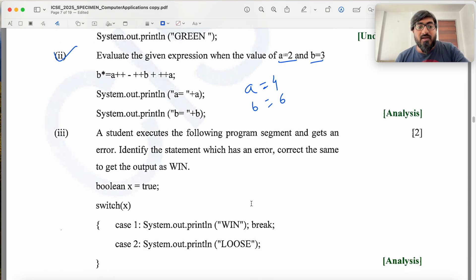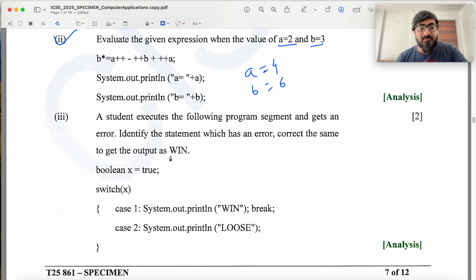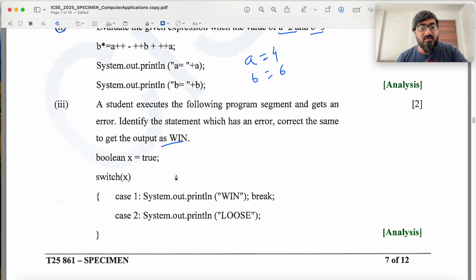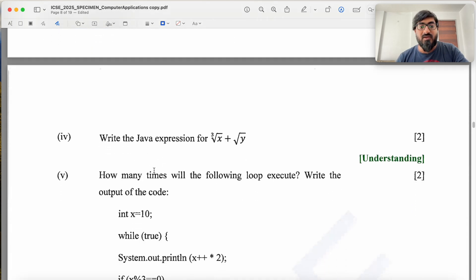A student code has an error, correct the same to output as win. It's a switch case with a break. In order to print this, this case has to match, so X has to be 1. Currently it is a boolean, so you remove this. This is int X equal to 1. When X is 1, case matches here, you print win then break, and that's your output.